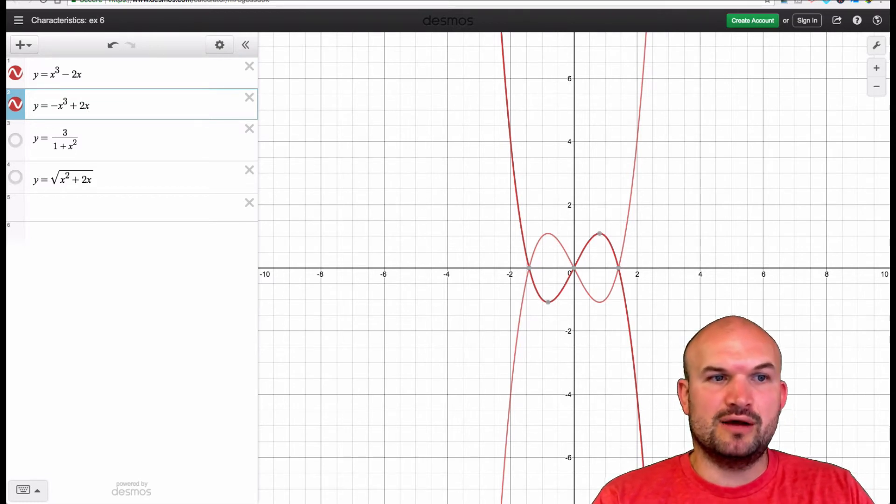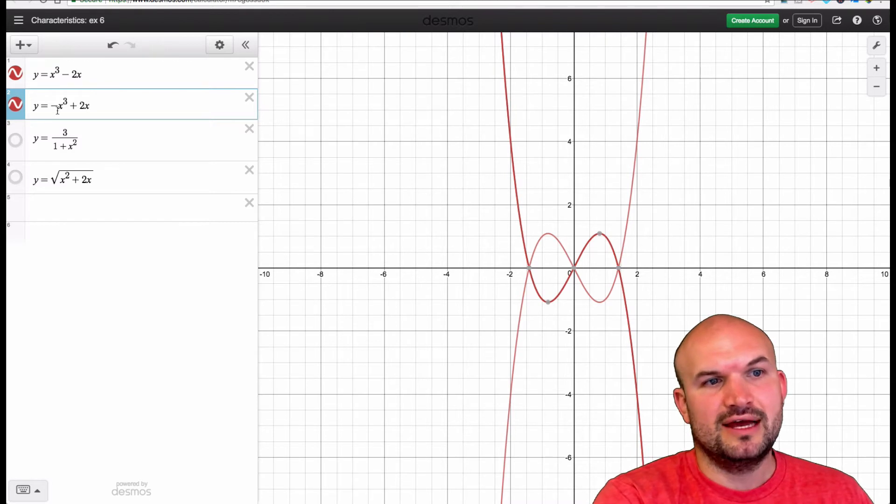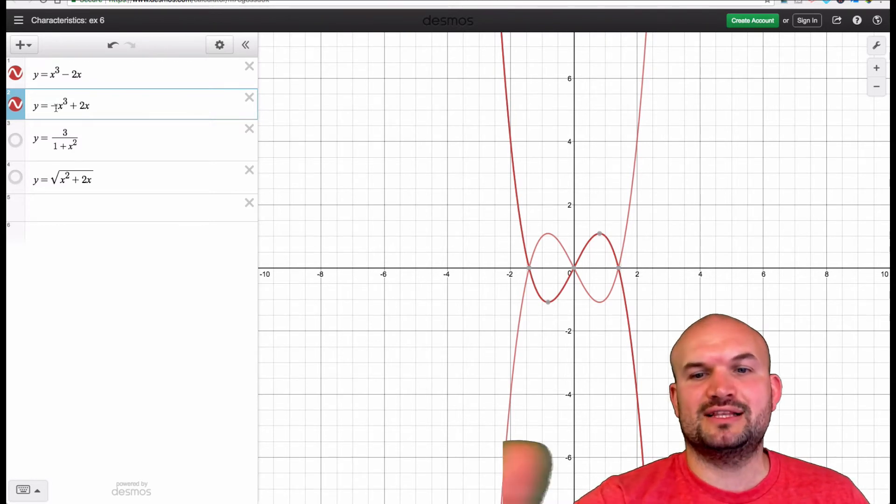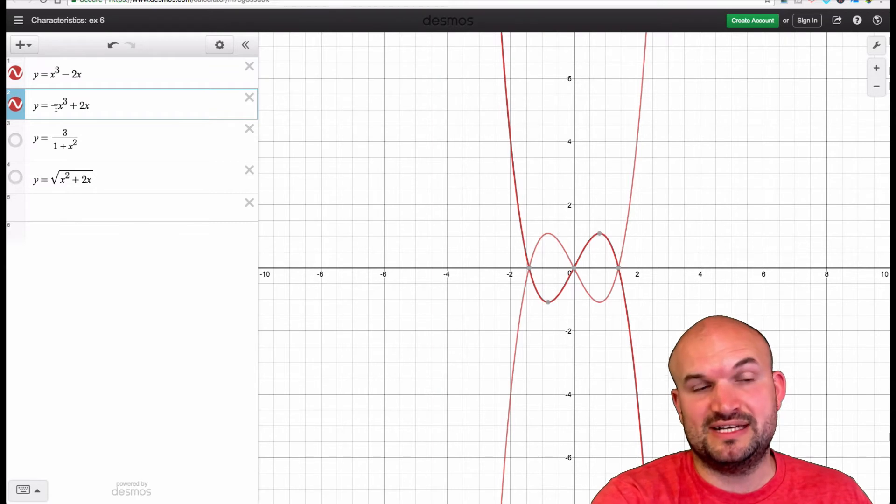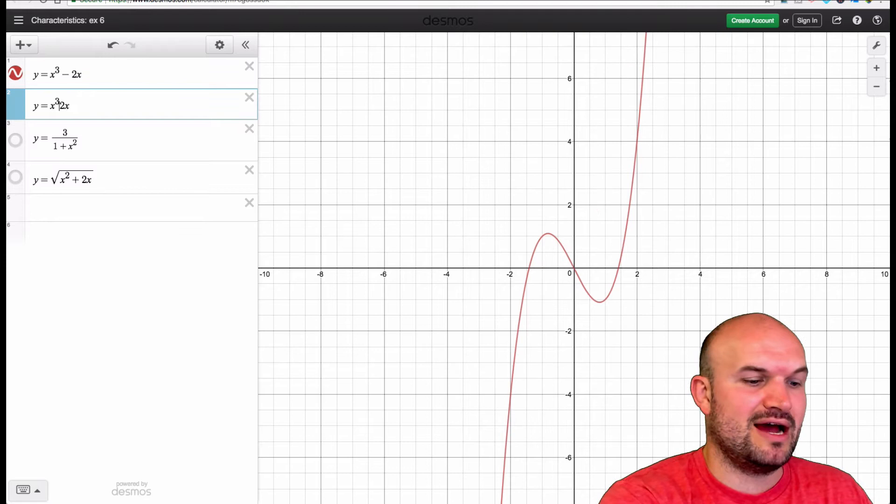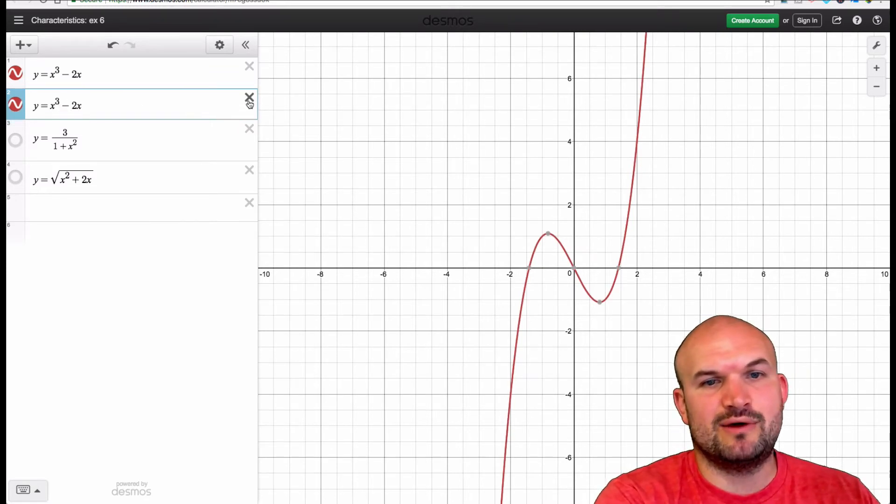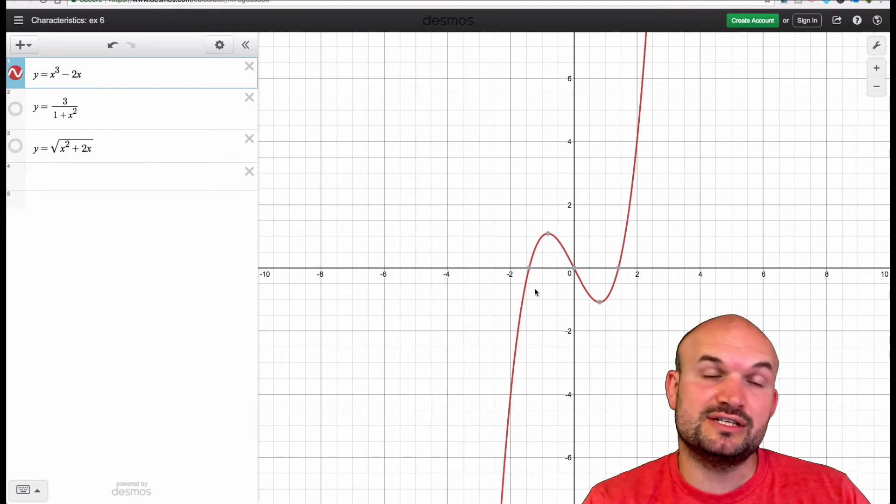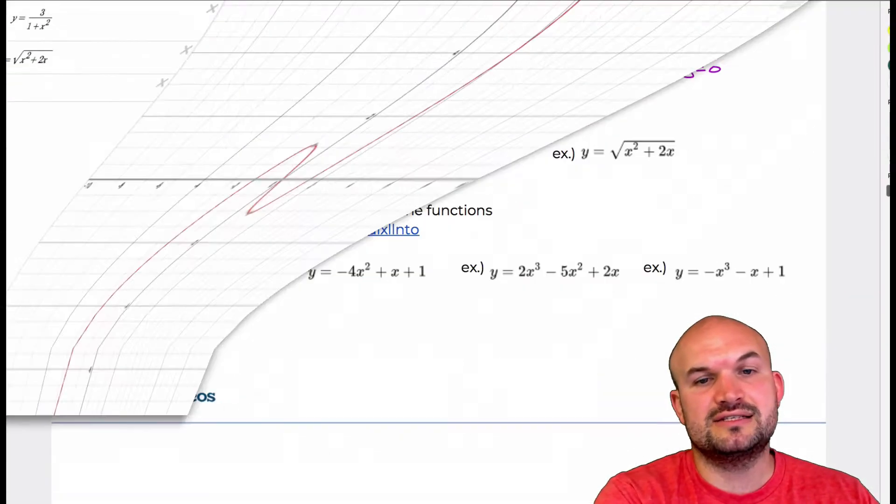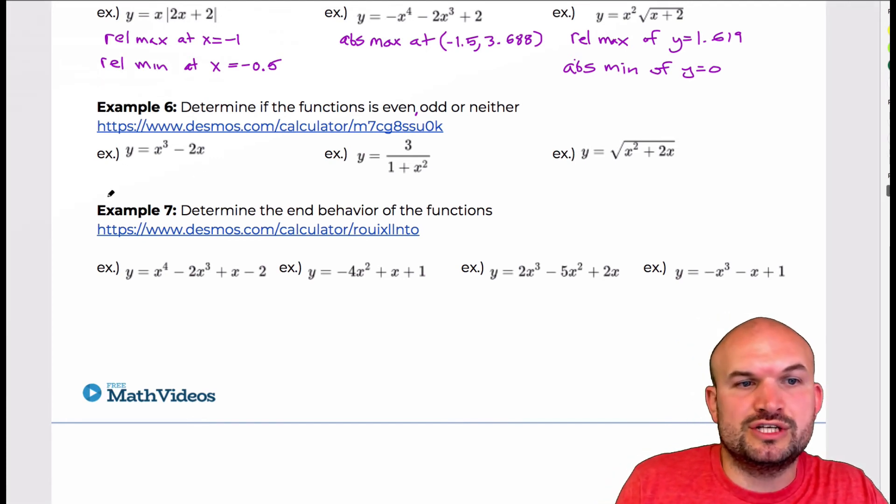So then what we want to do is reflect it again about the y-axis, making this now going to be a negative. If you put this in negative again, if you reflect this graph about the y-axis, which would basically mean plugging a negative in for there, what you would get is the exact same graph. So you reflect it, you reflect it, and that's exactly what that graph would look like. You can see that the function has symmetry about the origin, so therefore, it is odd.